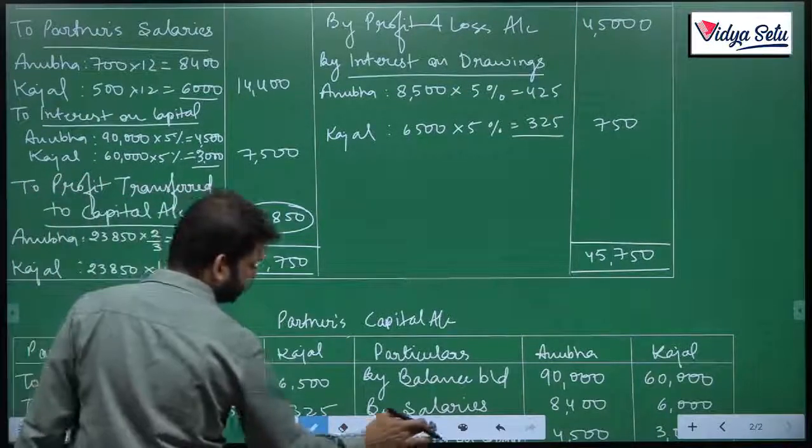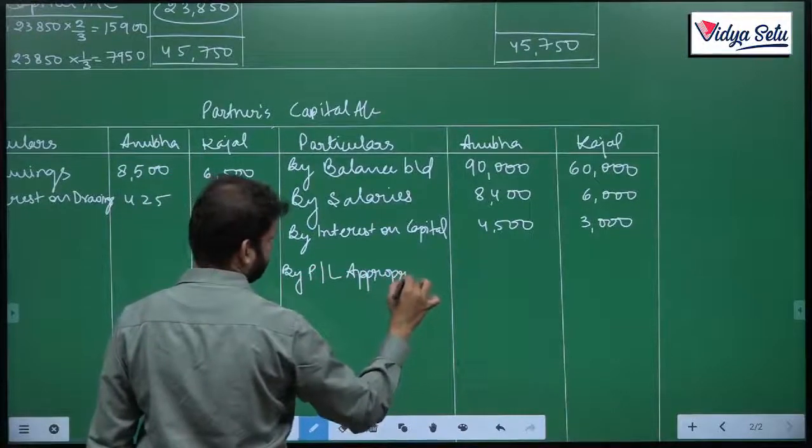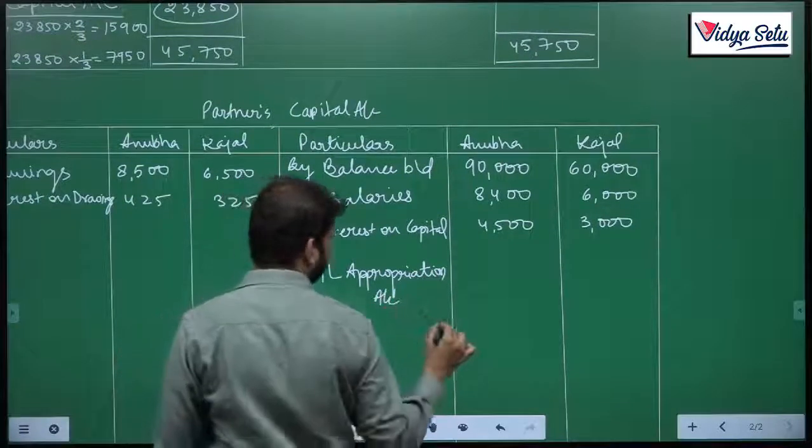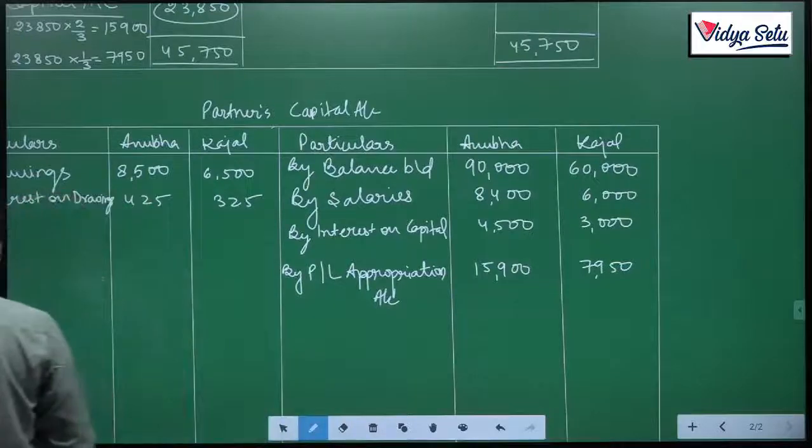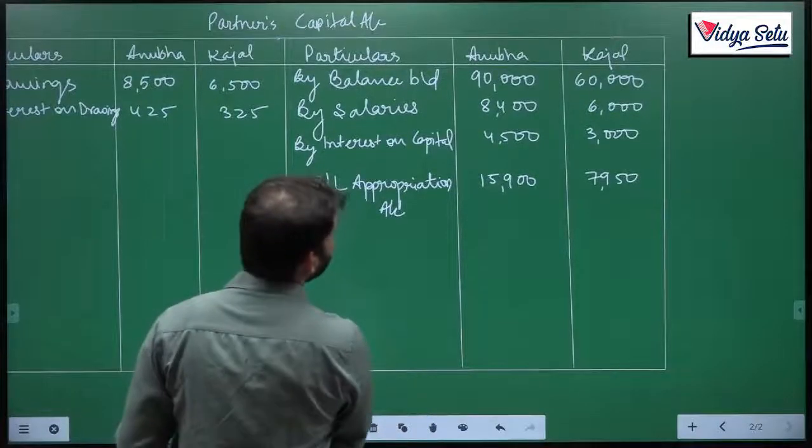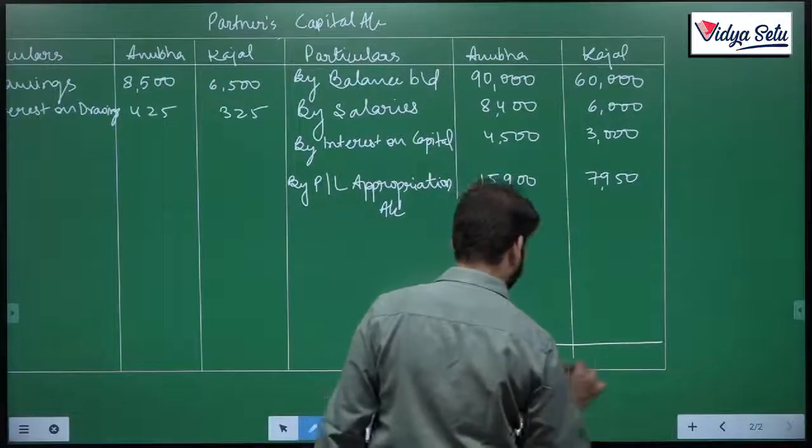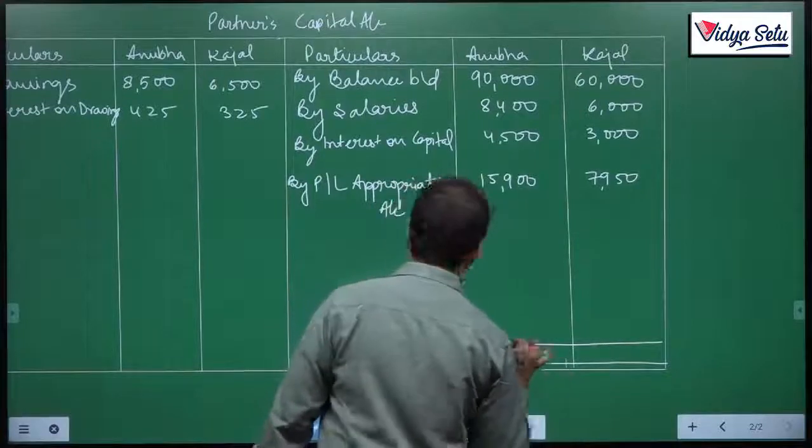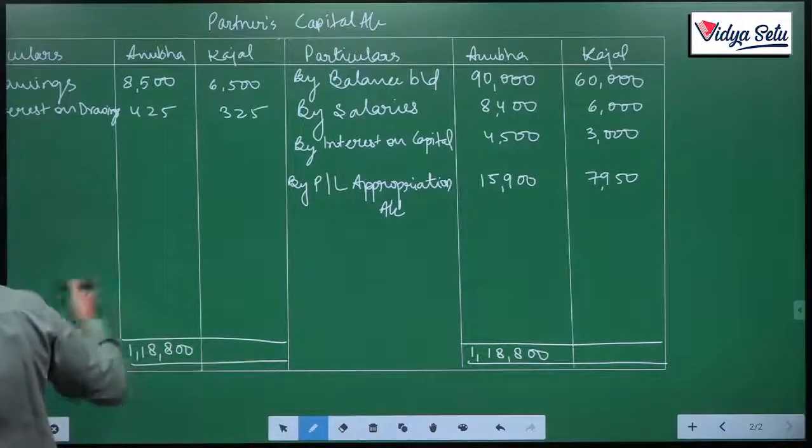Now, we will put the profits. We have posted everything, let us tally the account. 90,000 plus 8,400 plus 4,500 plus 15,900 equals 1,18,800. Let us find out the difference.